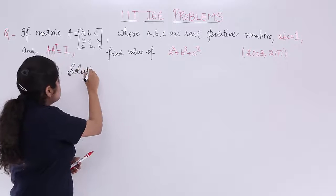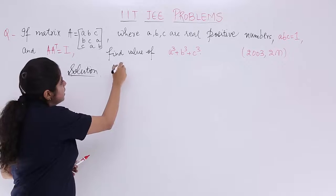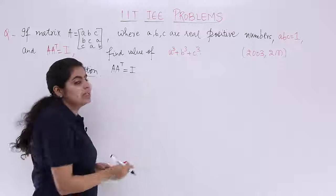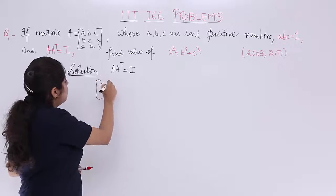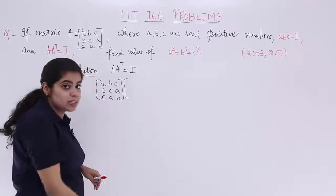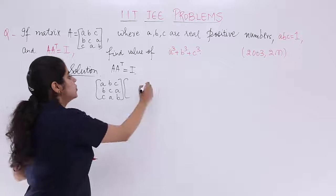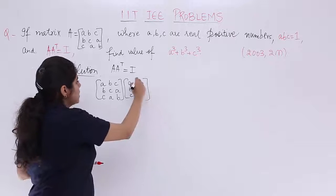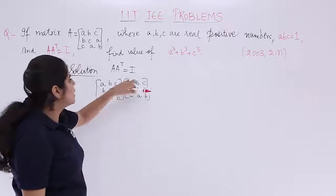I'll write the heading as 'Solution' and start. AA transpose = I means we have to multiply matrix A by its transpose. Matrix A is [ABC / BCA / CAB]. A transpose is obtained by converting rows to columns and columns to rows — so the rows of A become the columns of A transpose — and this product equals I, the identity matrix.